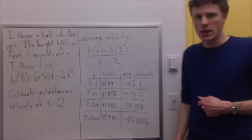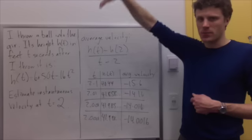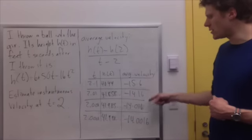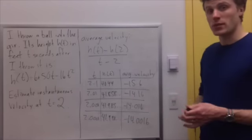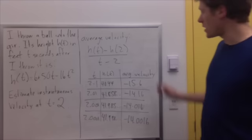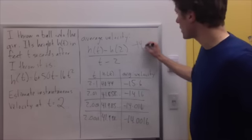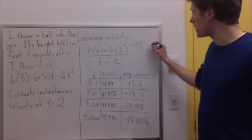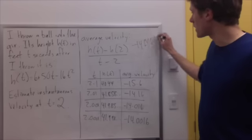First of all, that the velocity is negative means that the object is now falling. Okay. But second of all, I do see that these values seem to be approaching a number, which in this case is negative 14. So it looks like here that the object is going at a speed of negative 14 feet per second.